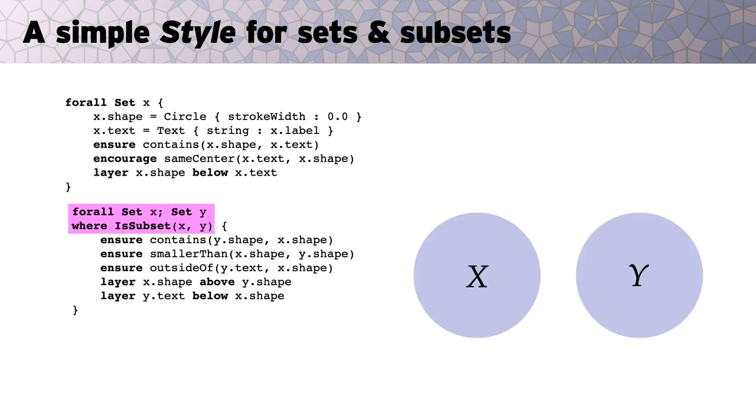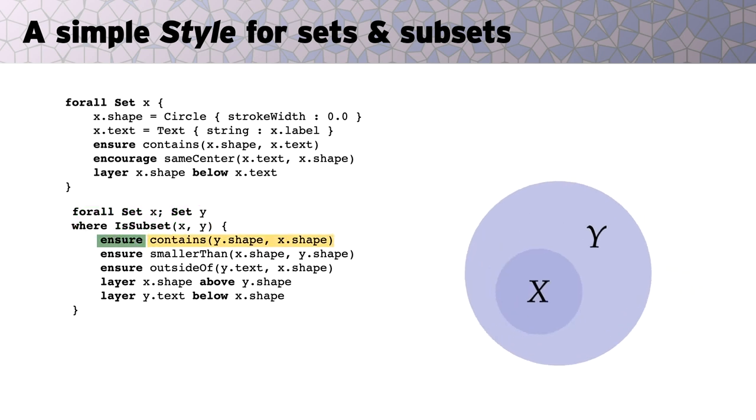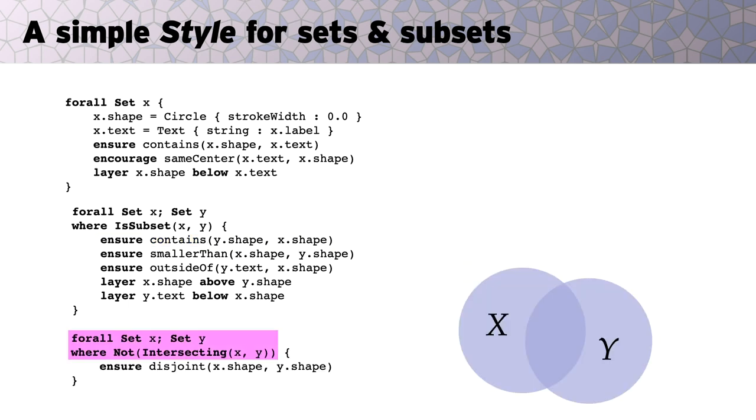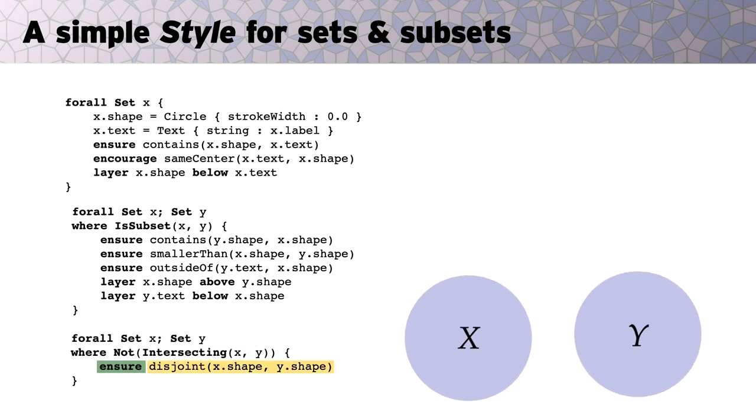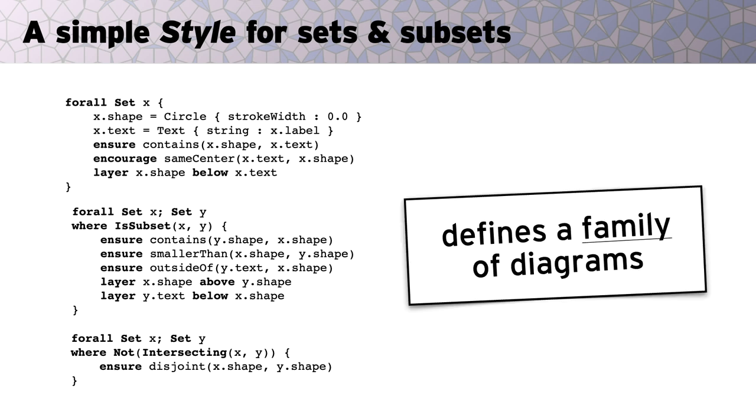An additional rule gives a visual interpretation to the subset relationship. Here we imagine all pairs of sets where one is a subset of the other, and add a constraint that the circle for the larger set contains the circle of the smaller set. Similarly, if sets are non-intersecting, we require that their circles be disjoint. Note again that for a given substance program, these conditions define a family of diagrams,